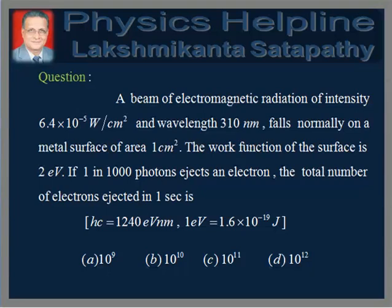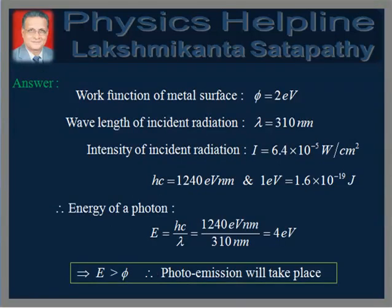And 1 electron volt is equal to 1.6 × 10⁻¹⁹ joules. The options are: 10⁹, 10¹⁰, 10¹¹, and 10¹². Now for the answer, it is given that the work function of the metal surface φ = 2 electron volts.